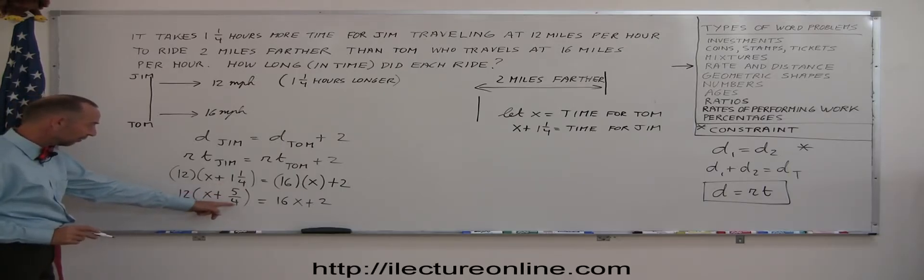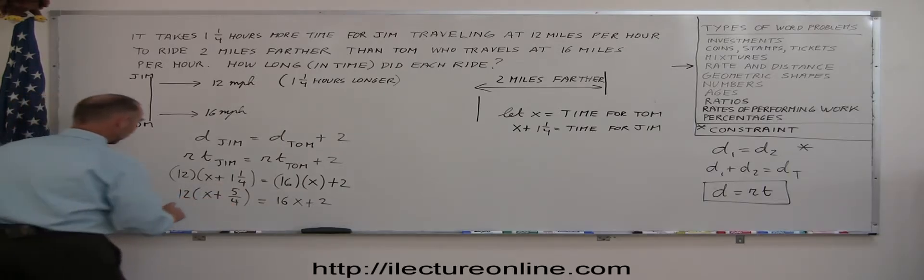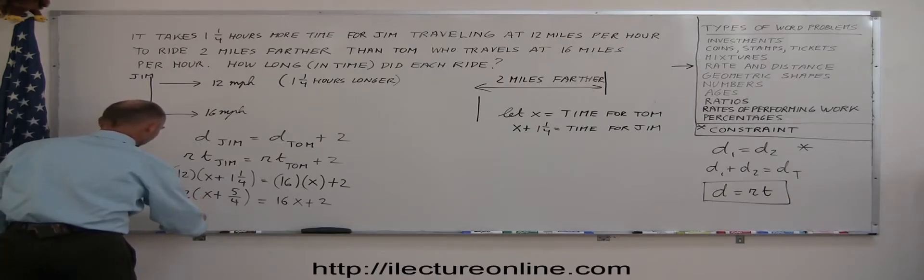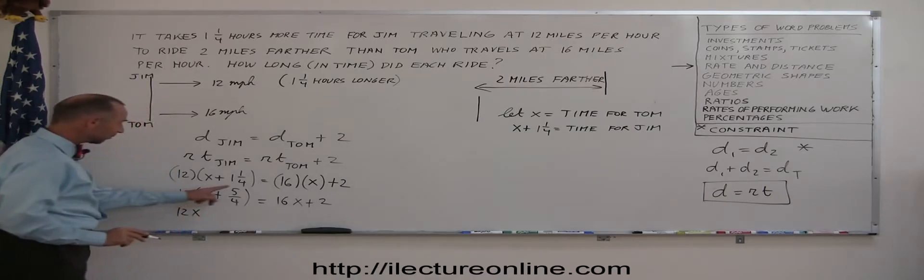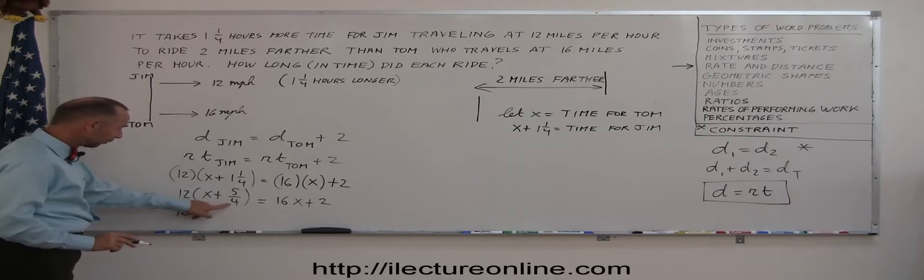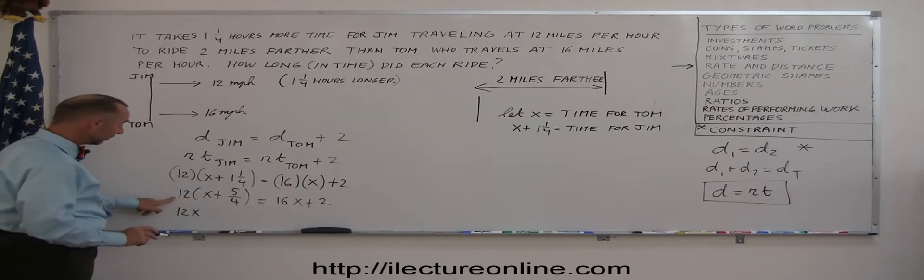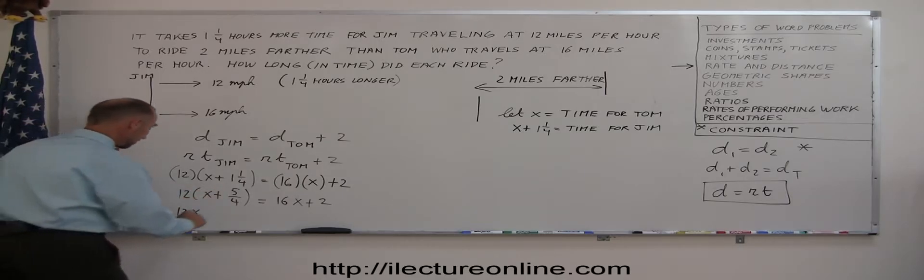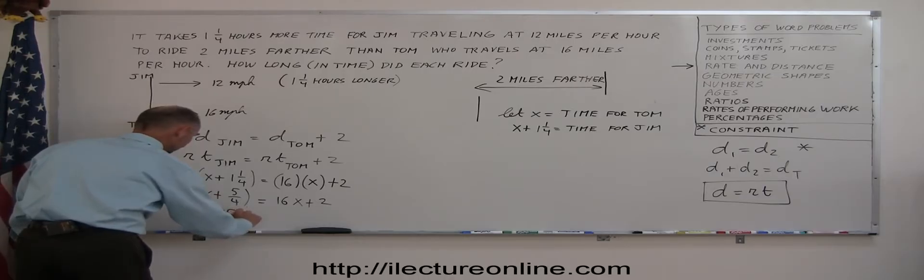The rate for Jim is 12 miles per hour. The time for Jim is x plus one and a quarter because it tells us Jim is traveling one and a quarter hours longer than Tom. And then here the rate for Tom is 16, travels faster. The time for Tom is simply x, the shortest time between the two. And we have our equation.